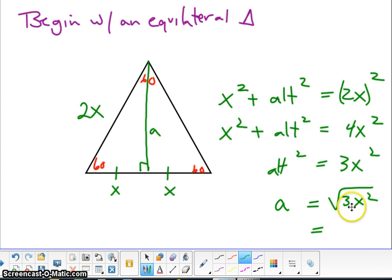Now, X squared can be simplified, but the radical 3 is going to have to stay inside. So therefore, the middle, or the altitude, will always be X root 3.